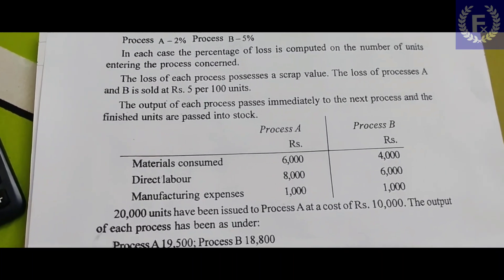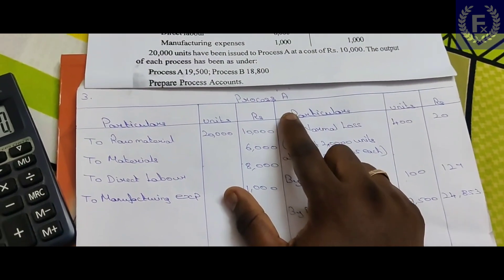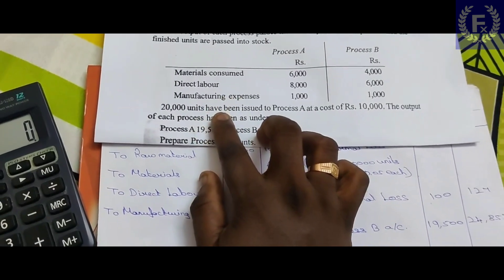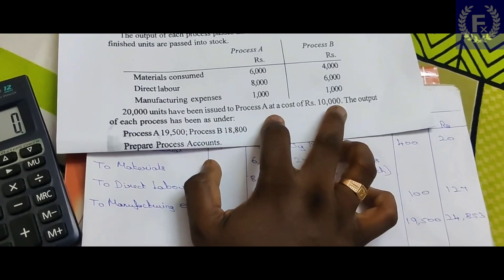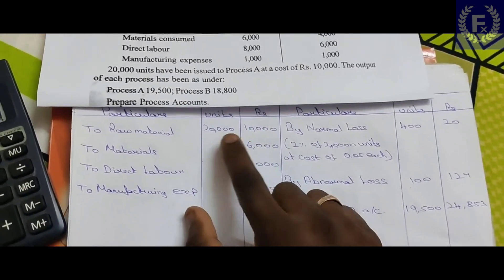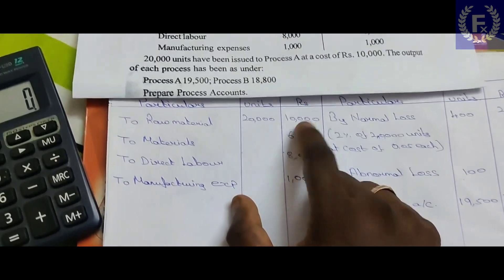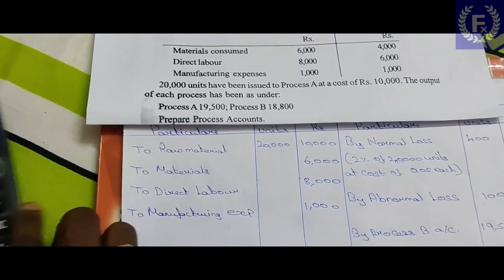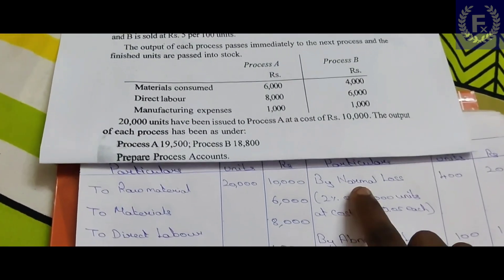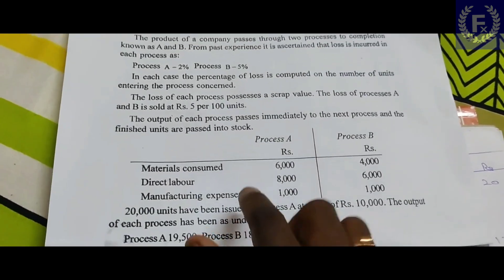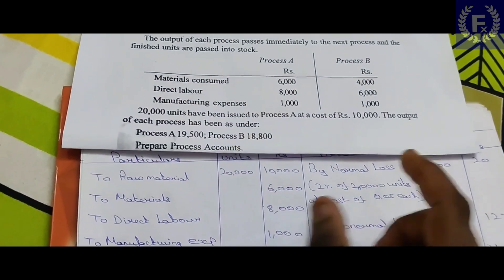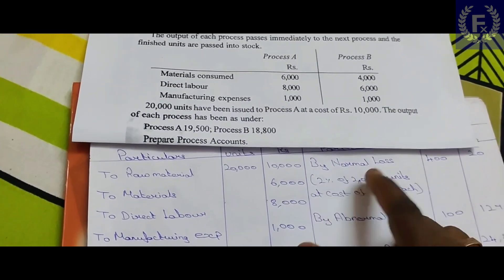Let's prepare the Process A account. Raw material is issued at 20,000 units with a cost of 10,000. So, 20,000 units are entered at an amount of 10,000. Next, we calculate normal loss: Process A has a 2% loss rate. So, 20,000 units into 2% equals 400 units as normal loss.